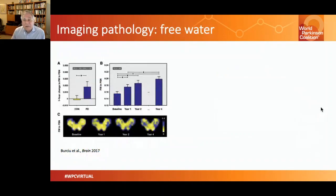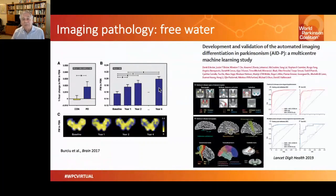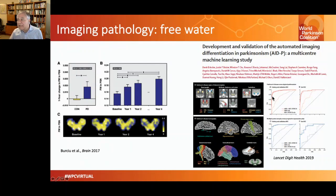Another MRI marker that is quite recent and showing promise is the imaging of free water, work done by David Valancourt in Florida. You can see that this increases over time. Furthermore, the patterns are different between different forms of Parkinsonism, and they have used machine learning — in an international collaboration — to compare people with Parkinson's against those with atypical Parkinson's. This automated image analysis is very sensitive and specific to differentiate between those, but also between two forms of atypical Parkinson's: multiple system atrophy and progressive supranuclear palsy.